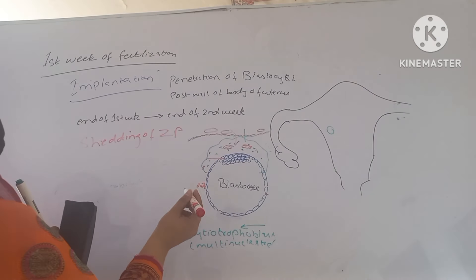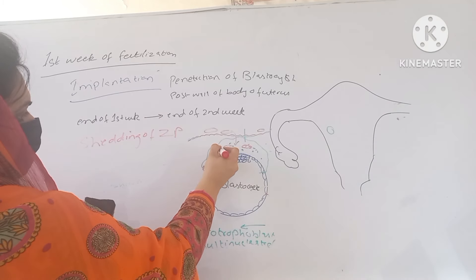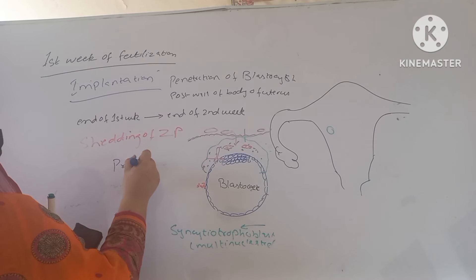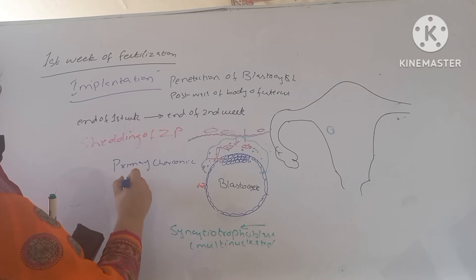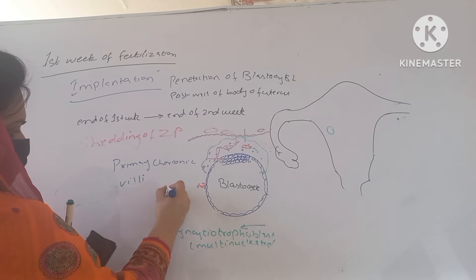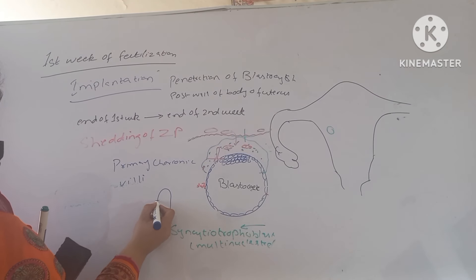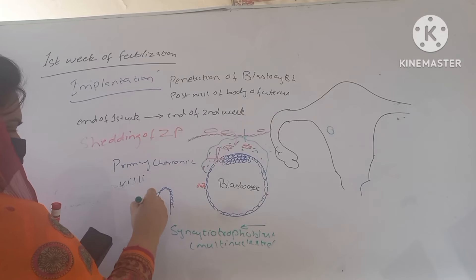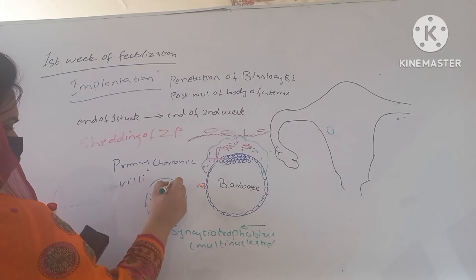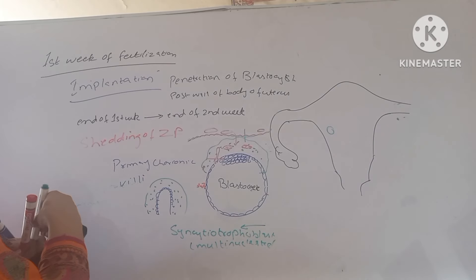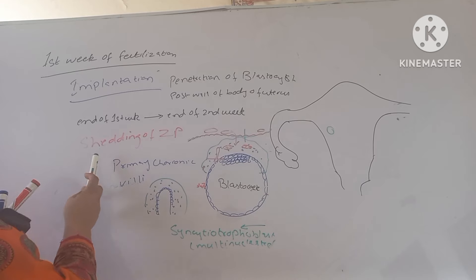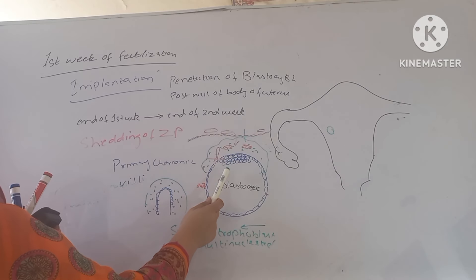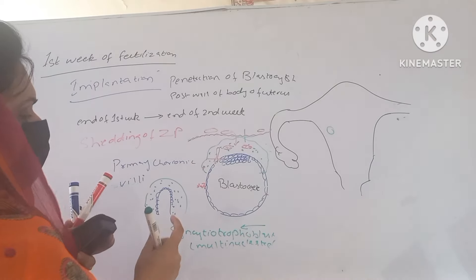Another process occurs here, which is the penetration of the cytotrophoblasts into the syncytiotrophoblasts to form the primary chorionic villi. Primary chorionic villi are just a layer of cytotrophoblasts — single layer of mononucleated cells — covered by the multi-nucleated layer of the syncytiotrophoblasts. At the end of the first week, the primary chorionic villi are formed, zona pellucida sheds, blood-filled lacunae are formed, and primary uteroplacental circulation is developed. In this way, the process of implantation is completed.